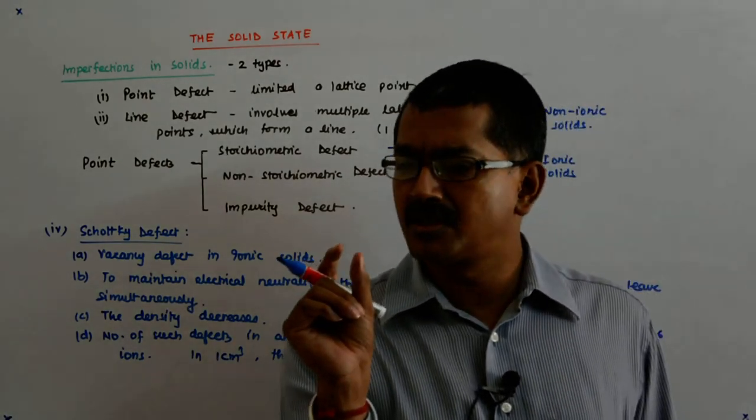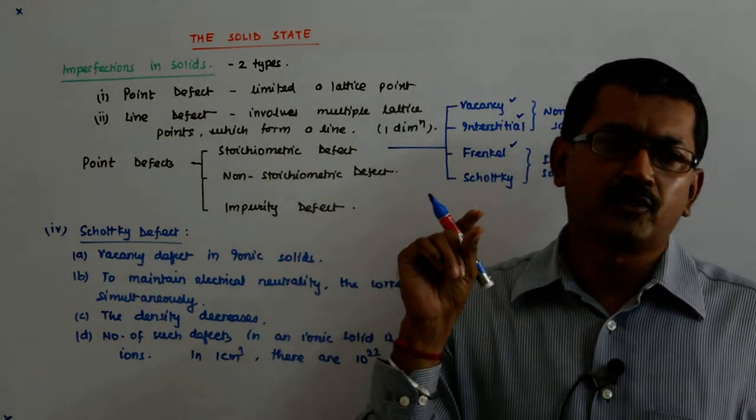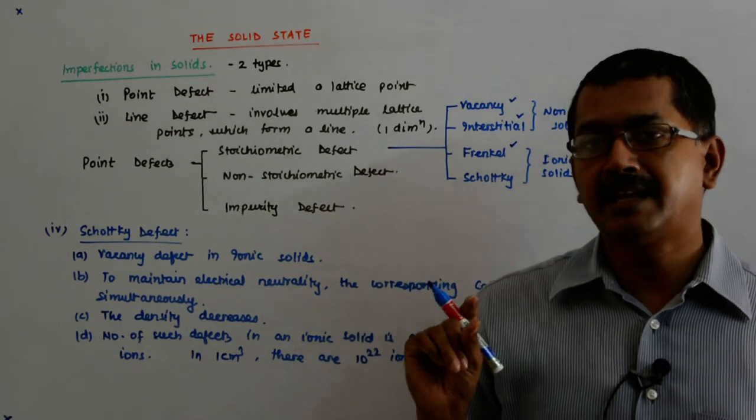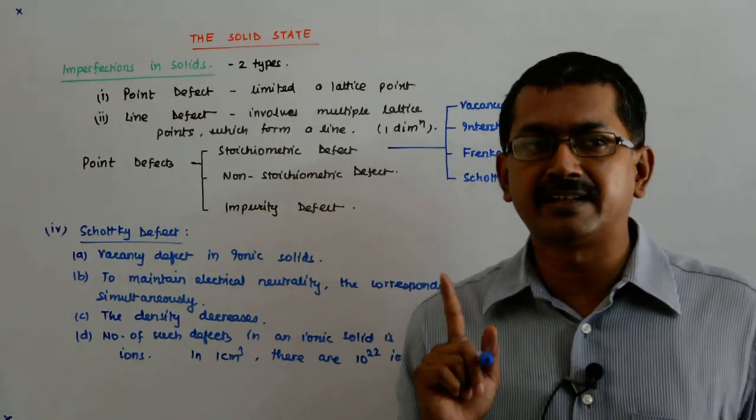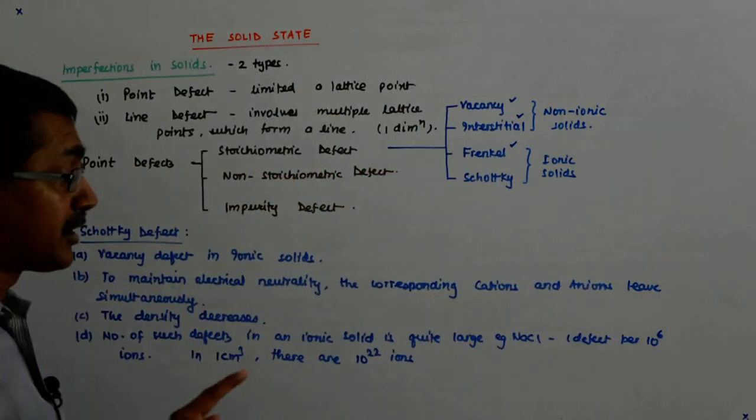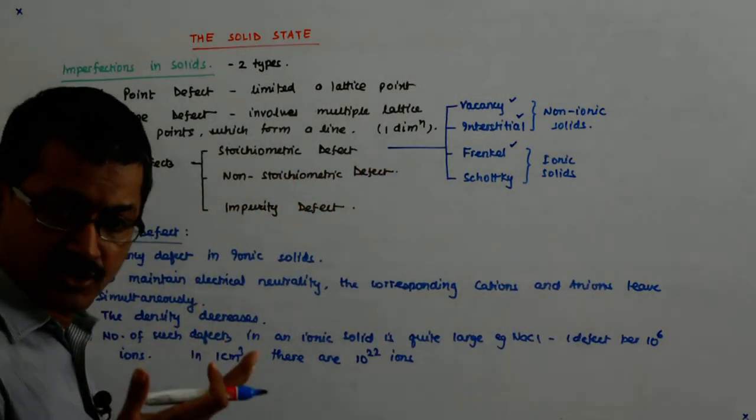And one centimeter cube is how much? Size of a big dice. And in that, if there is one every 10 to the power 6, then for 10 to the power 22, there will be 10 to the power 16 defects in one centimeter cube.